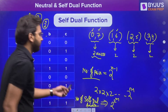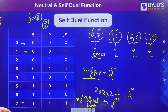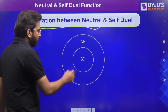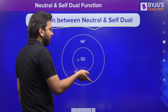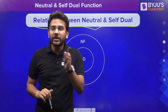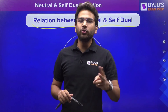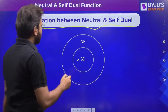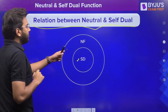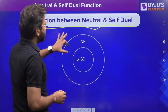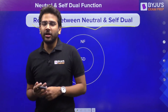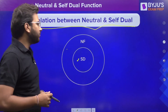Now let's establish the relation between neutral functions and self-dual functions. If a function is self-dual, it will definitely be neutral, because being neutral is one of the necessary conditions for being self-dual. However, if a function is neutral, it may or may not be self-dual. So every self-dual function is neutral, but not every neutral function is self-dual. I hope this concept is clear, and I will see you in the next video.